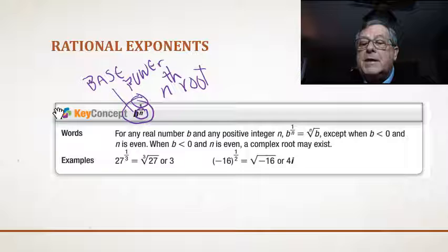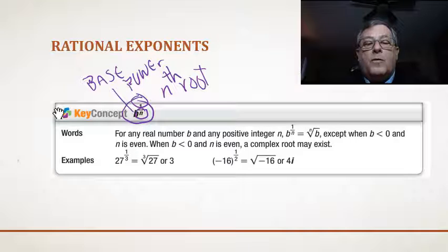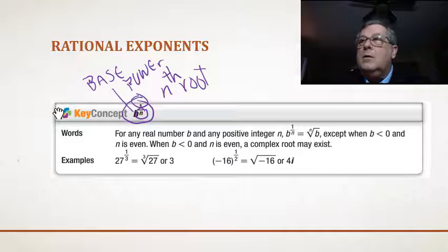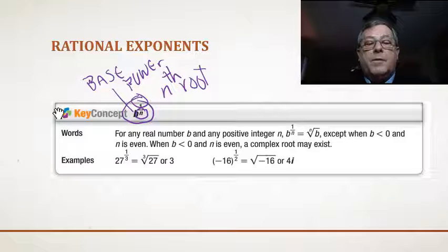except where b is less than 0 and n is even. Now, if b were less than 0, if it's got a negative number with an even, trying to take an even root, squared, fourth, sixth, whatever, then we're going to be dealing with a complex number or an imaginary number. So, when b is less than 0 and n is even, a complex root may in fact exist.